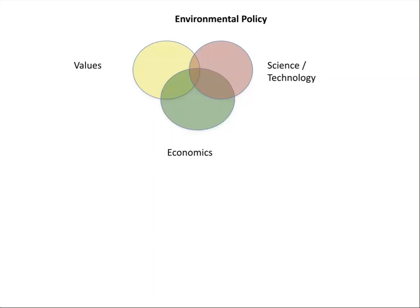Our scientific understanding and use of technology advances over time. Our economics evolves as well, and certainly our values — both individually and as a society, as a nation, and even globally — change over time. But as they change, they share space. We can think of that intersection of values, science, and economics as where environmental policy derives from — the three somewhat independent but correlated factors.